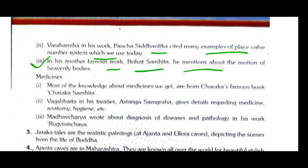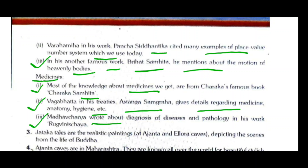On medicine: most of our knowledge about medicines comes from Charaka's famous book, the Charaka Samhita. Vagbhata, in his treatise Ashtanga Sangraha, gives details regarding medicine and anatomy. Madhavacharya wrote about the diagnosis of diseases and pathology in his work Madhava Nidana.